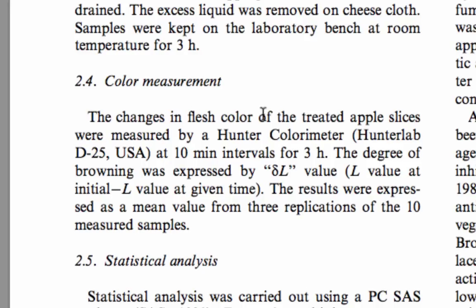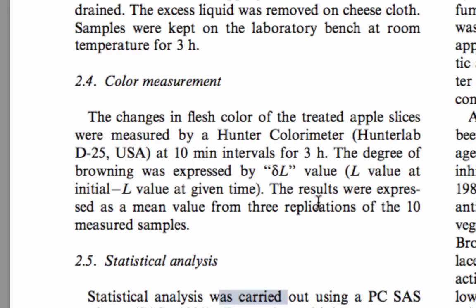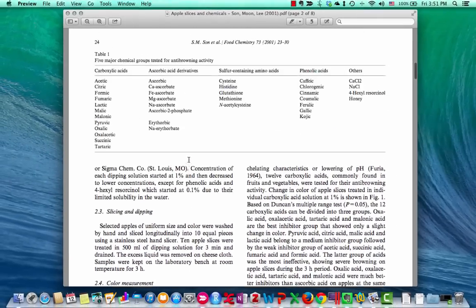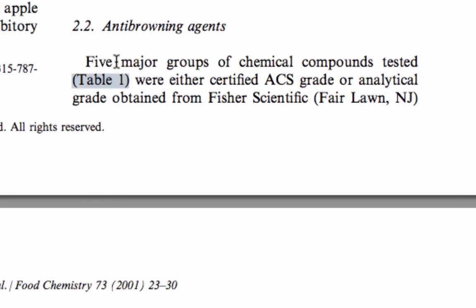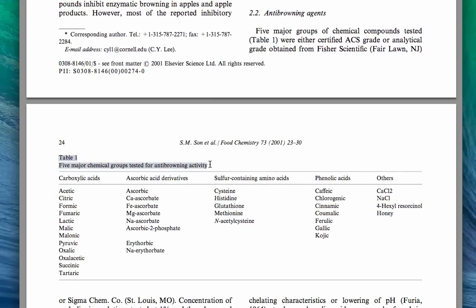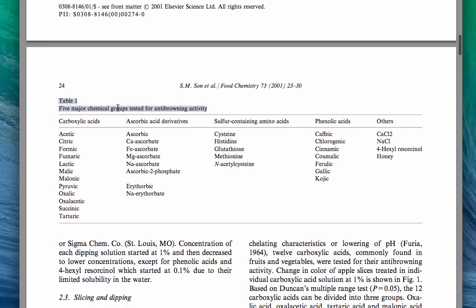Sounds more like a blog post or a story instead of a research paper. 'The changes in the flesh color were measured.' 'Results were expressed as a mean value.' 'Was carried out.' Almost everything is in past passive. One other thing to note is the table. 'Table 1 — five major groups of chemical compounds tested.' Here's Table 1 with its title: 'Five major chemical groups tested for anti-browning activity.' You can see all the chemicals they used. This is another thing you can do in your Method — use a table or a figure, a diagram or a picture, to help make your method more clear, especially if it's difficult to explain in sentences.